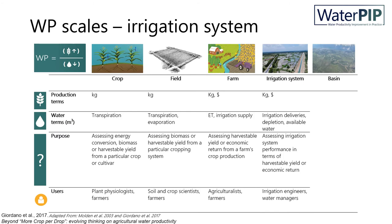At the irrigation scheme level, the focus is on relating irrigation deliveries at scheme level, but also looking at the spatial distribution of water productivity and other irrigation performance indicators. This is important information for irrigation managers responsible for water distribution.